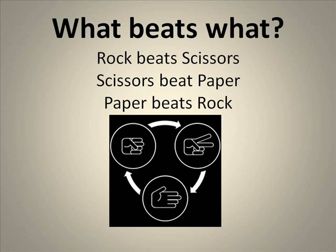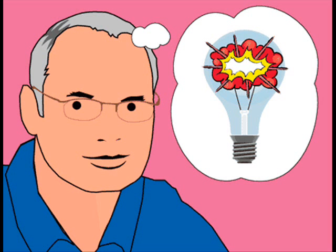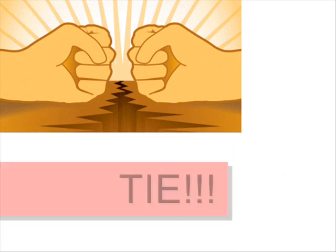Well, how do you know who wins? Rock beats scissors, scissors beat paper, and paper beats rock. So, for each round, what are the possible outcomes? Well, obviously you can win or lose. But is there anything else? Yes — you can tie as well.